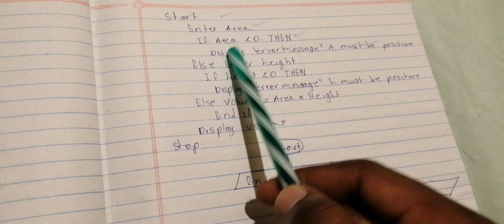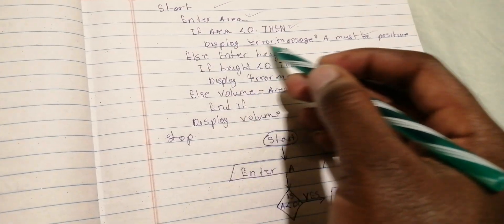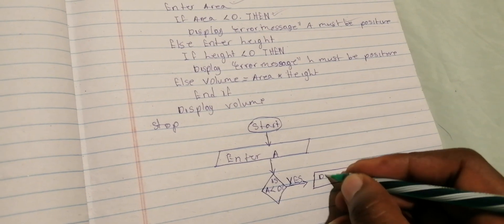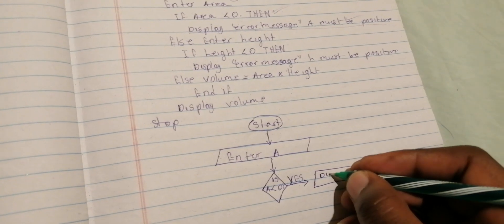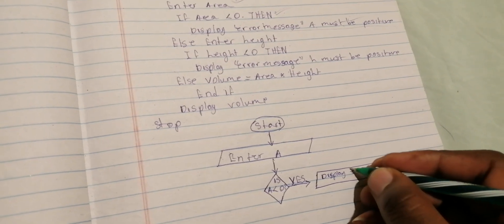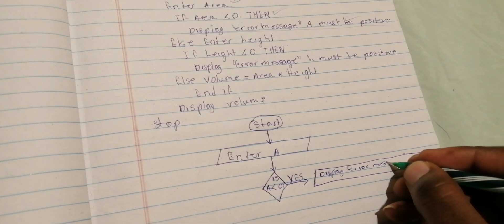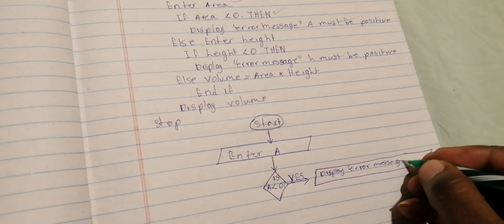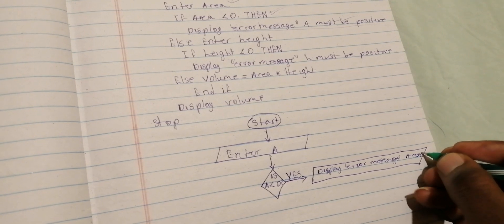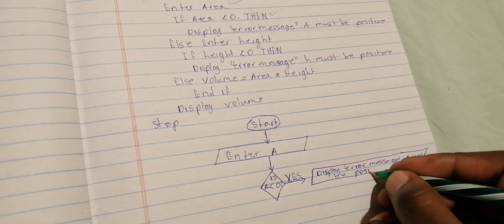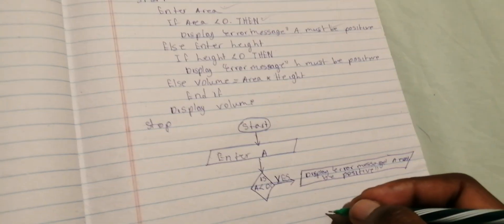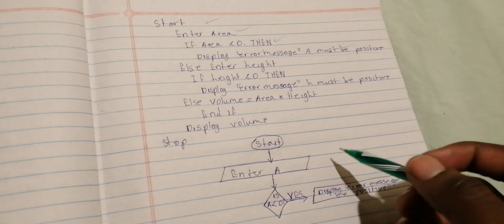Inside that parallelogram you copy what you see: 'Display error message: A must be positive'.